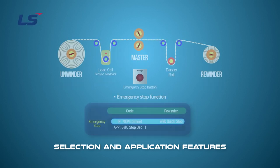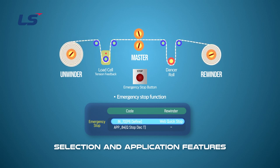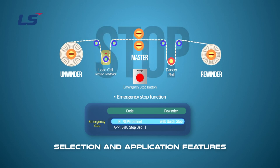The web quick stop function is to stop the system in emergency situations, such as accidents. In situations where the motor speed changes according to the diameter, it will decelerate based on the current speed. To protect the load in the interlocking system, all rolls must stop at the same time, so this function can be used to protect the equipment.